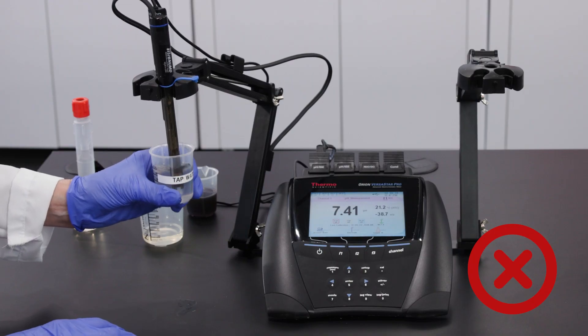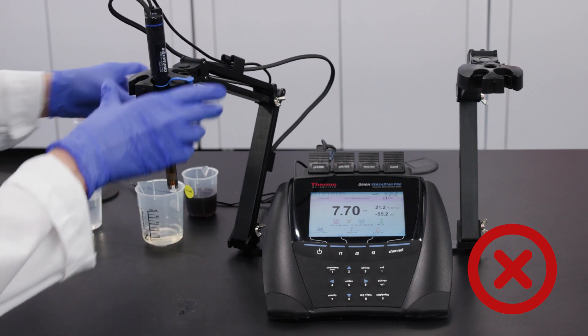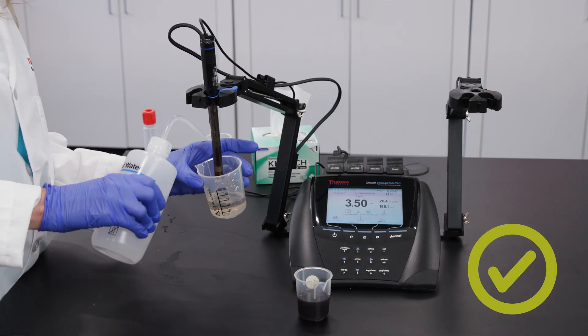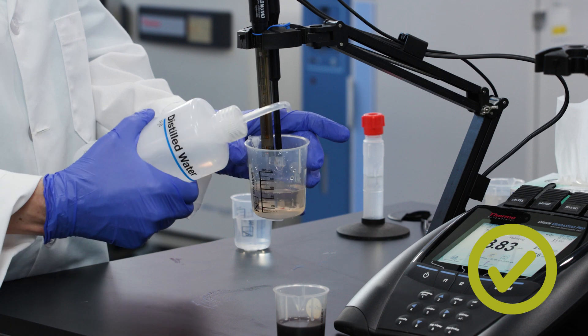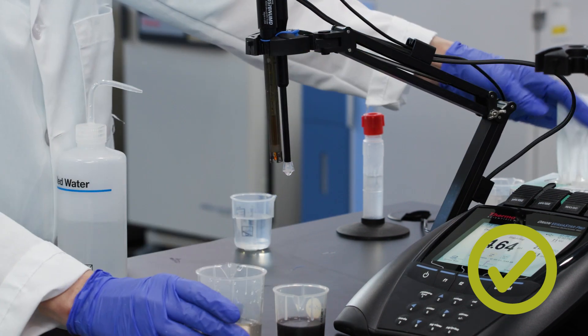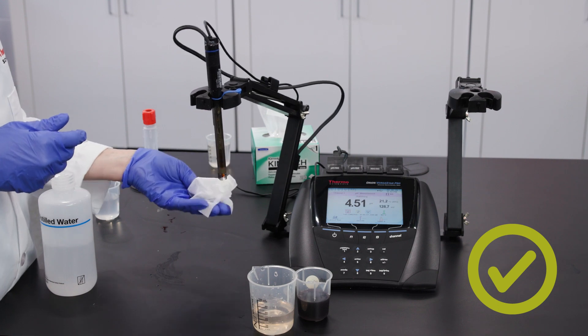Improper rinsing, such as with impure water like tap water, can contaminate low ionic strength samples such as pure water, boiler water, cooling water, and rain water. When rinsing, use a generous amount of purified water like reagent grade water, deionized water, or distilled water, and rinse everything that touches the solution.